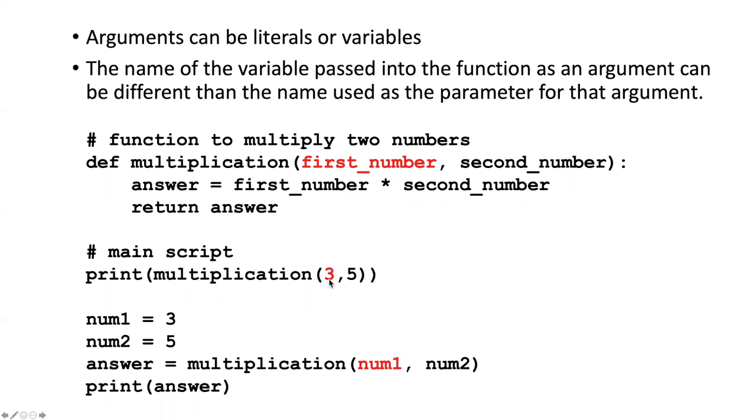I could pass it in directly as a literal. So if I pass in the number three, then the value assigned to first_number in the function will be three. Or I could pass it in by referring to some other variable. So here I've set the value of three for the variable num1, and then that value will be passed into the function. And num1 does not have the same name as first_number, but that's fine because when I actually call the function, I don't have to use the same variable names that I used for the parameters when I define the function.